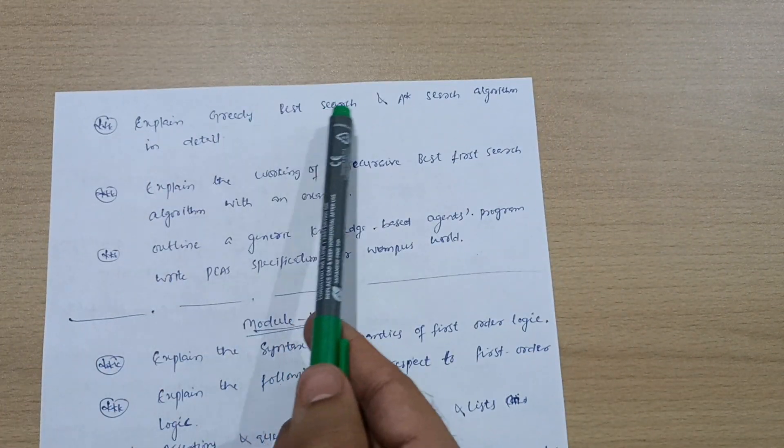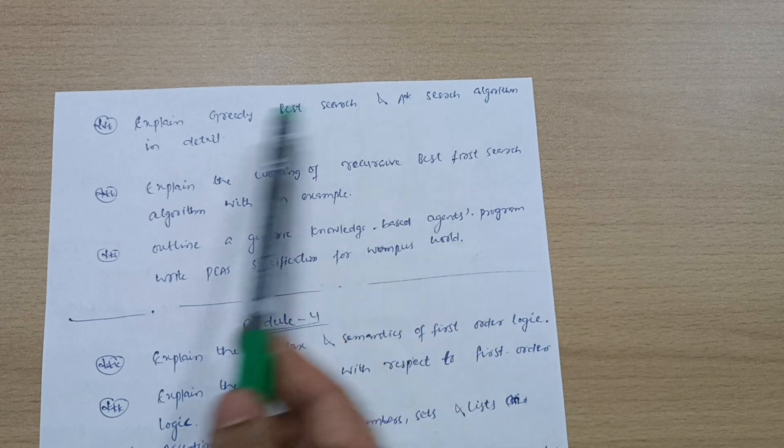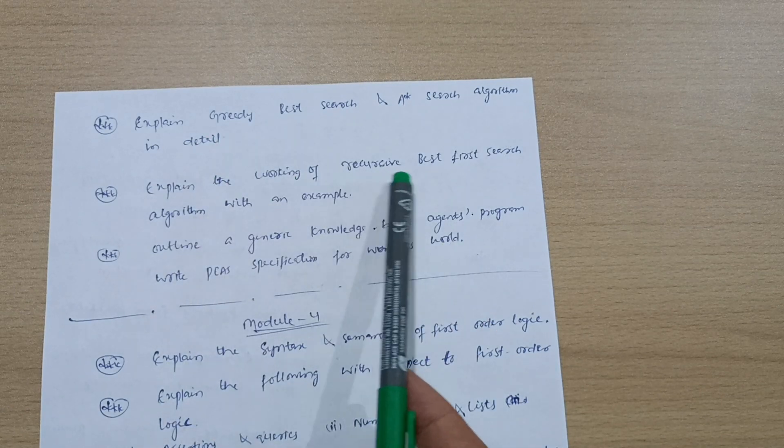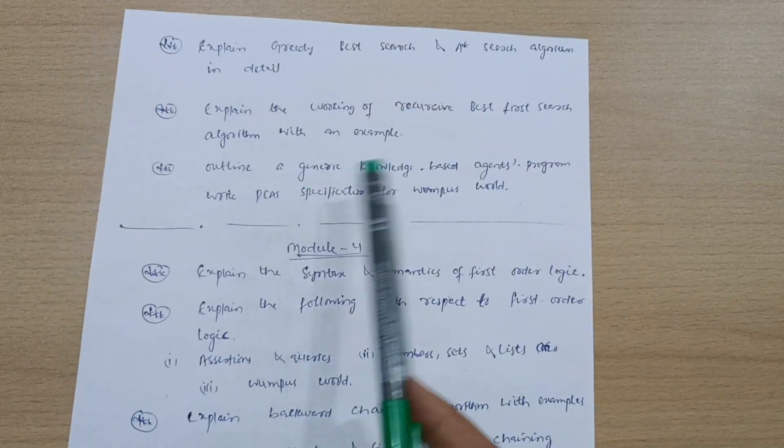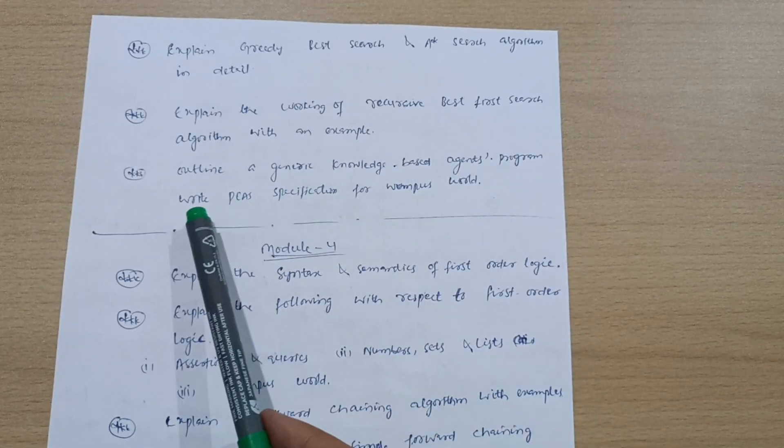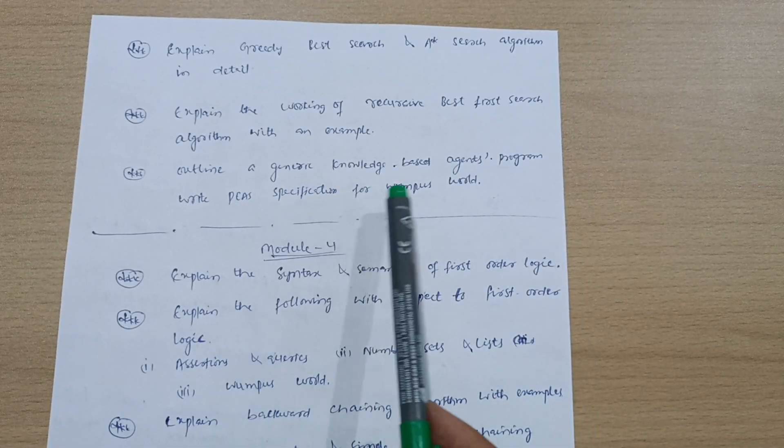Next three questions from Module 3: Expand greedy best search and A* search algorithm in detail. Explain the working of recursive best-first search algorithm with an example. Outline agents, knowledge-based agents program. PEAS specification for wumpus world.